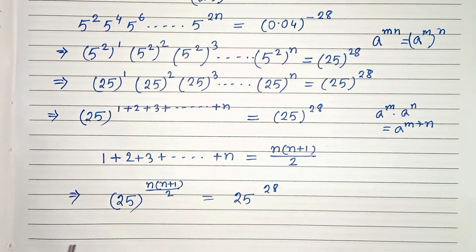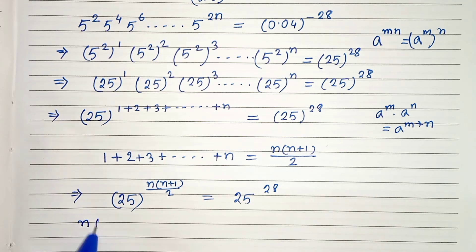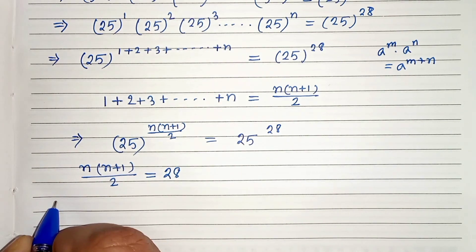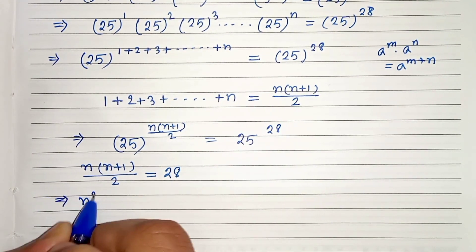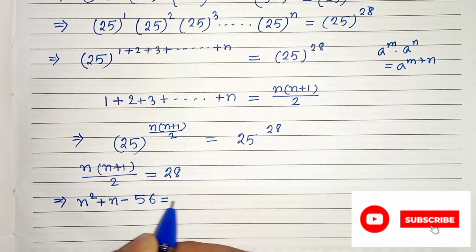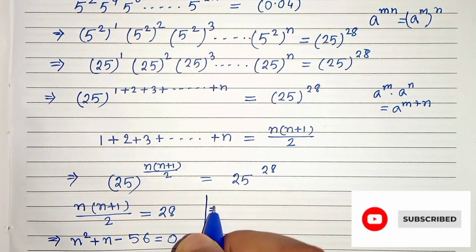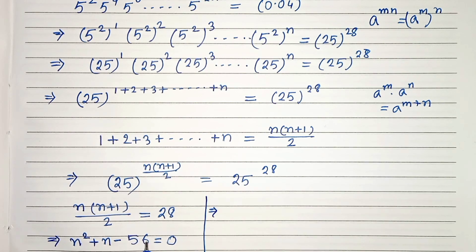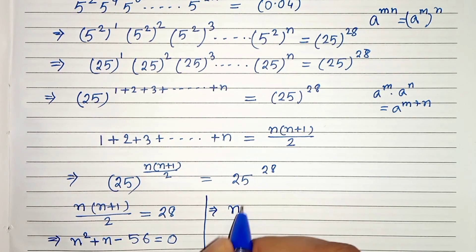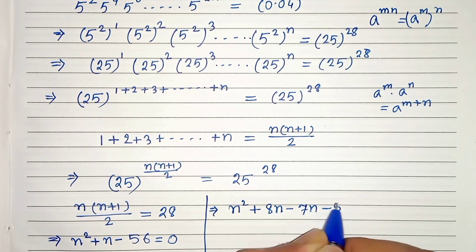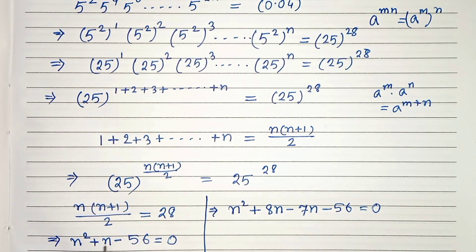Now comparing both sides, we get n times n plus 1 by 2 equals 28. In the next step, we can write n squared plus n equals 56, so n squared plus n minus 56 equals 0. Our sum is plus 1 and product is minus 56, so we write n squared plus 8n minus 7n minus 56.